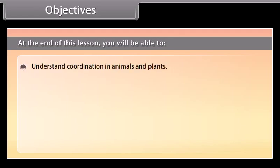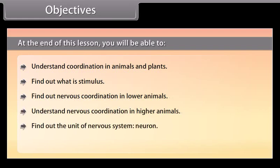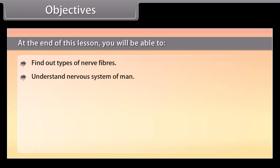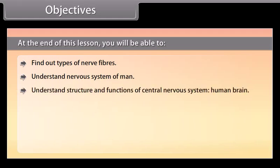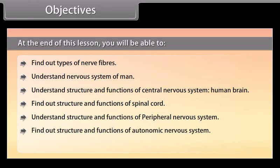At the end of this lesson, you will be able to: understand coordination in animals and plants; find out what a stimulus is; find out nervous coordination in lower animals; understand nervous coordination in higher animals; find out the unit of the nervous system; find out types of neurons; find out types of nerve fibers; understand the nervous system of man; understand the structure and functions of the central nervous system, human brain, spinal cord, peripheral nervous system, autonomic nervous system; and understand reflex actions.